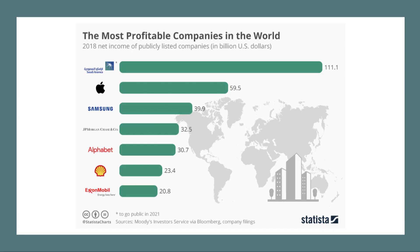In 2018, these were the most profitable companies in the world. Apple, for many, many years, has been known as the world's most profitable company. But it looks from this chart as if those days are over. The Saudi state oil company, Saudi Aramco, has disclosed profits substantially above that of Apple. And then you've got some big businesses underneath.